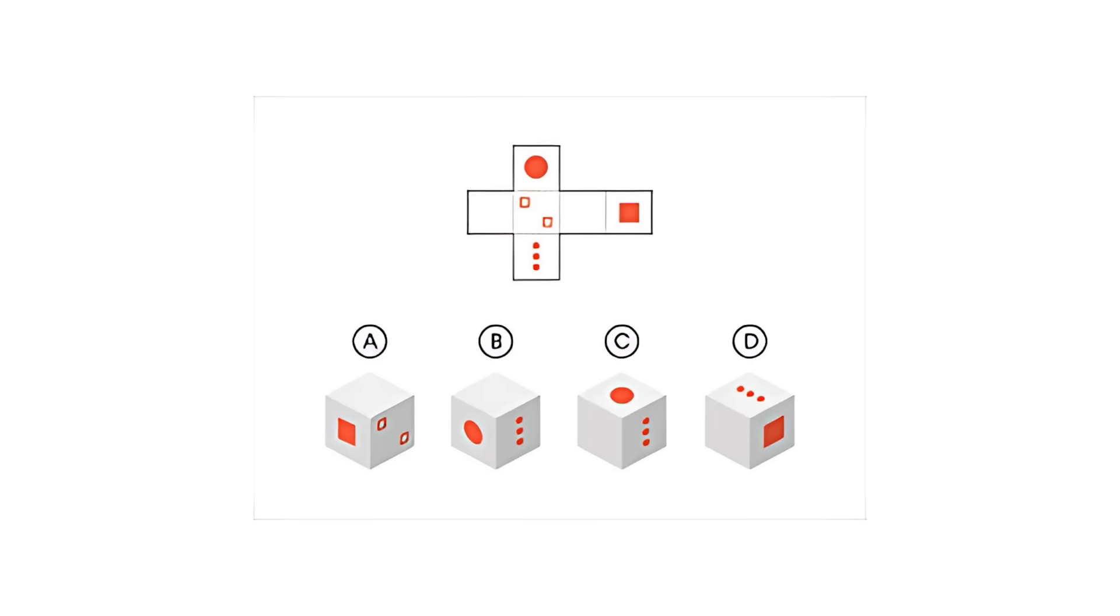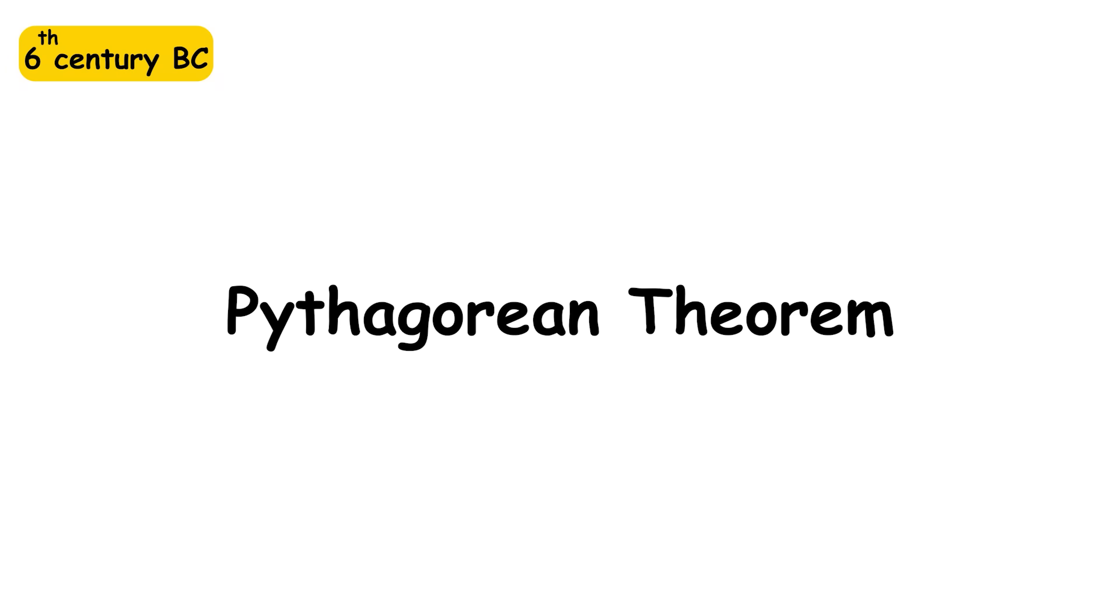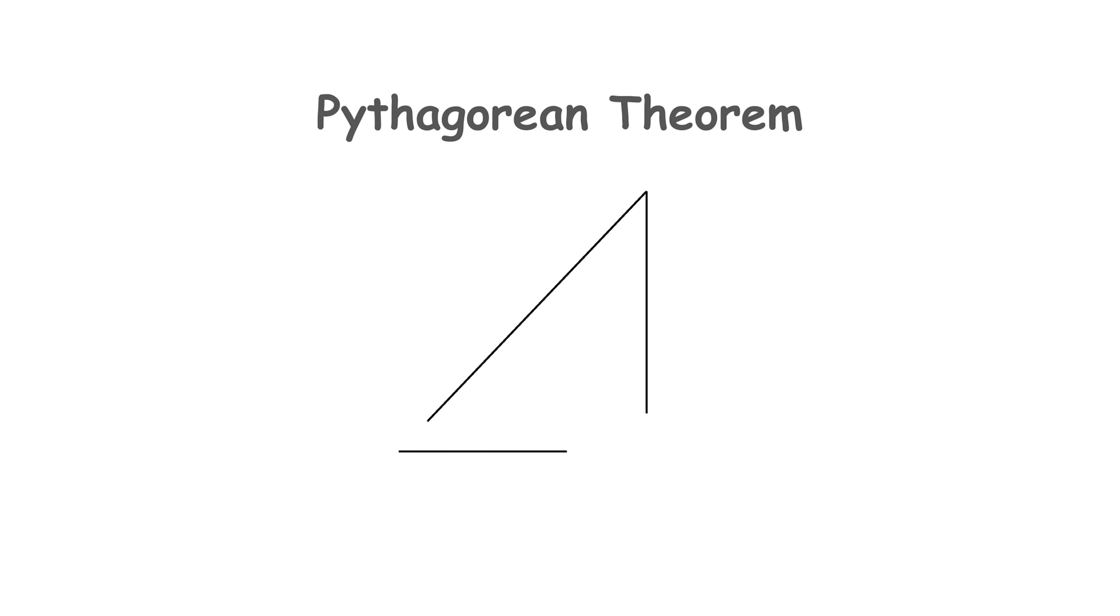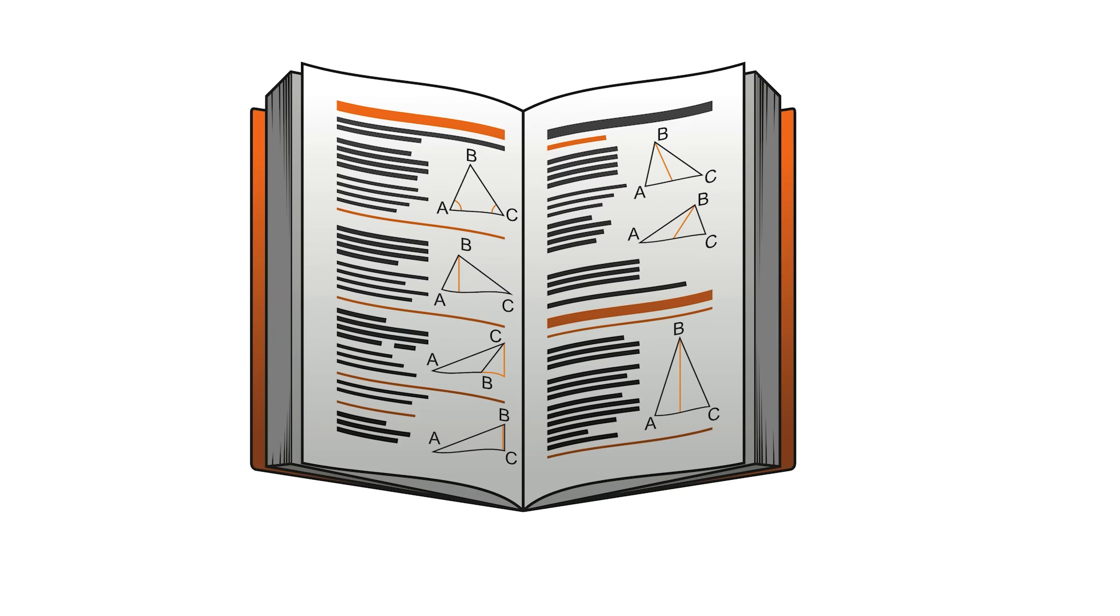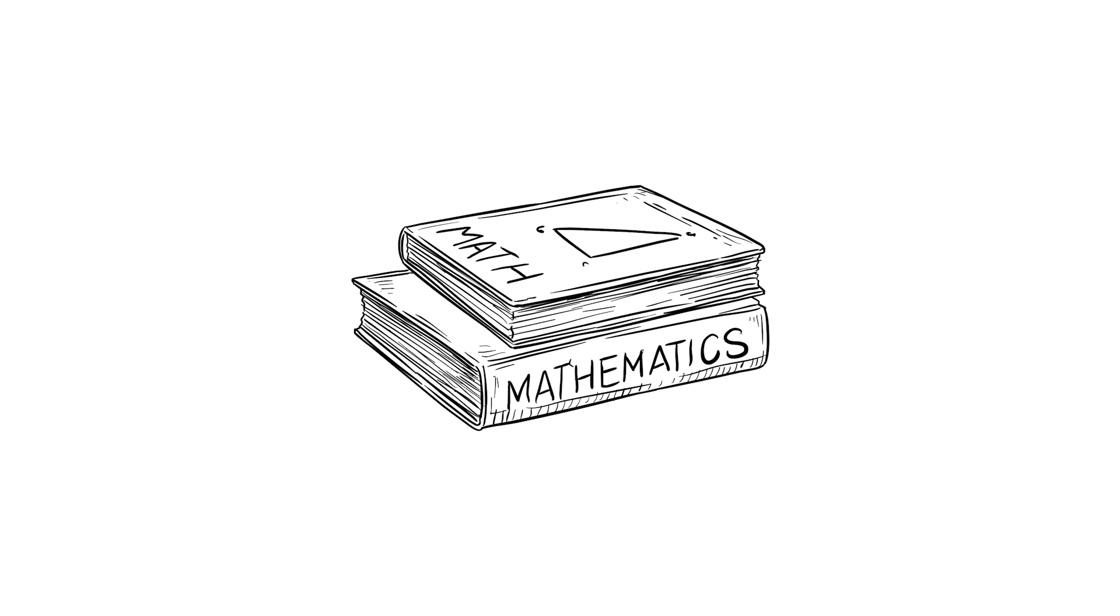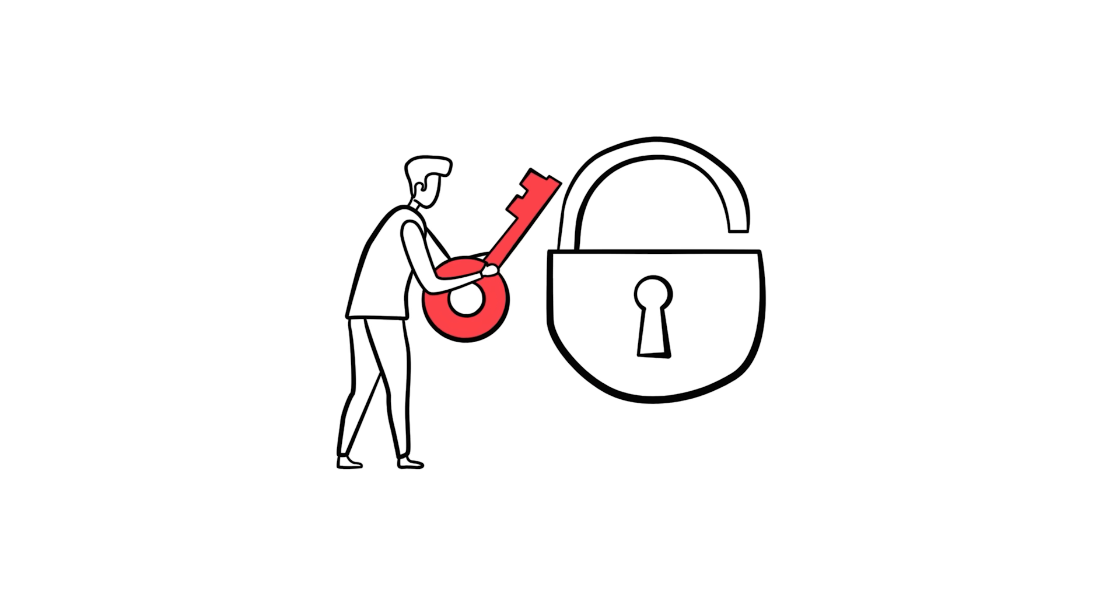6th century BC: Pythagorean theorem. The Pythagorean theorem relates the sides of a right triangle, allowing us to calculate distances and solve geometric problems. It has applications in mathematics, physics, engineering, architecture, and navigation, and is key to solving spatial problems.